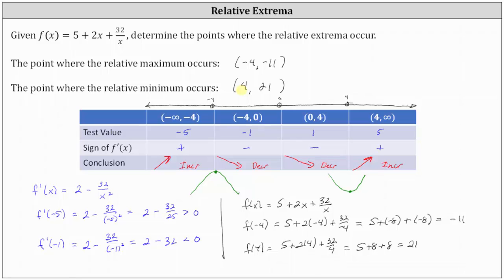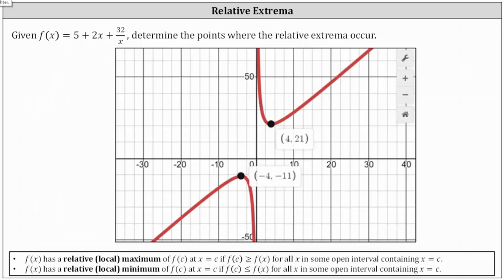Let's verify this graphically. Working from left to right, the function changes from increasing to decreasing at x equals negative 4, resulting in a relative maximum of negative 11. Then the function changes from decreasing to increasing at x equals 4, resulting in a relative minimum of positive 21 at x equals 4.